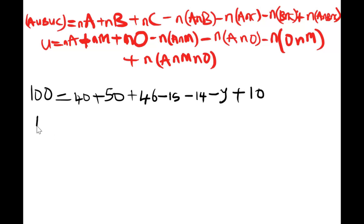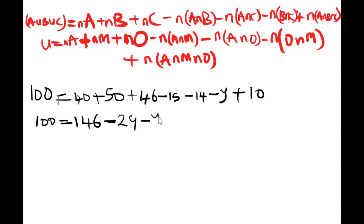Simplifying: summing the positive integers, 40 + 50 = 90, plus 46 = 136, plus 10 = 146. For the negative integers: 15 + 14 = 29, minus y. So we have 100 = 146 − 29 − y, which gives 100 = 117 − y.